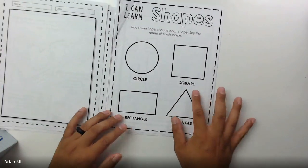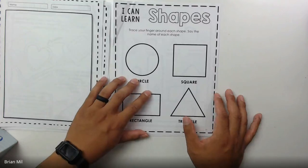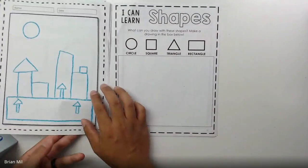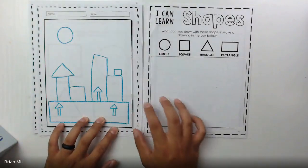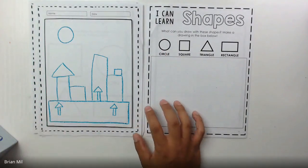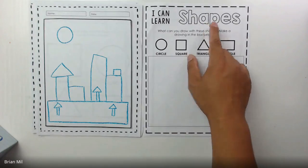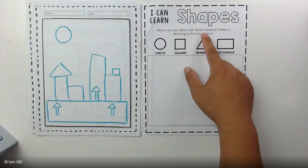Alright, I'm going to flip the page. There's nothing for us to do over here, but you can already see I already kind of drew on the other side already because I did it with the last class. Let's talk about what I did here. It says on this next page, 'What can you draw with these shapes? Make a drawing in the box below.'